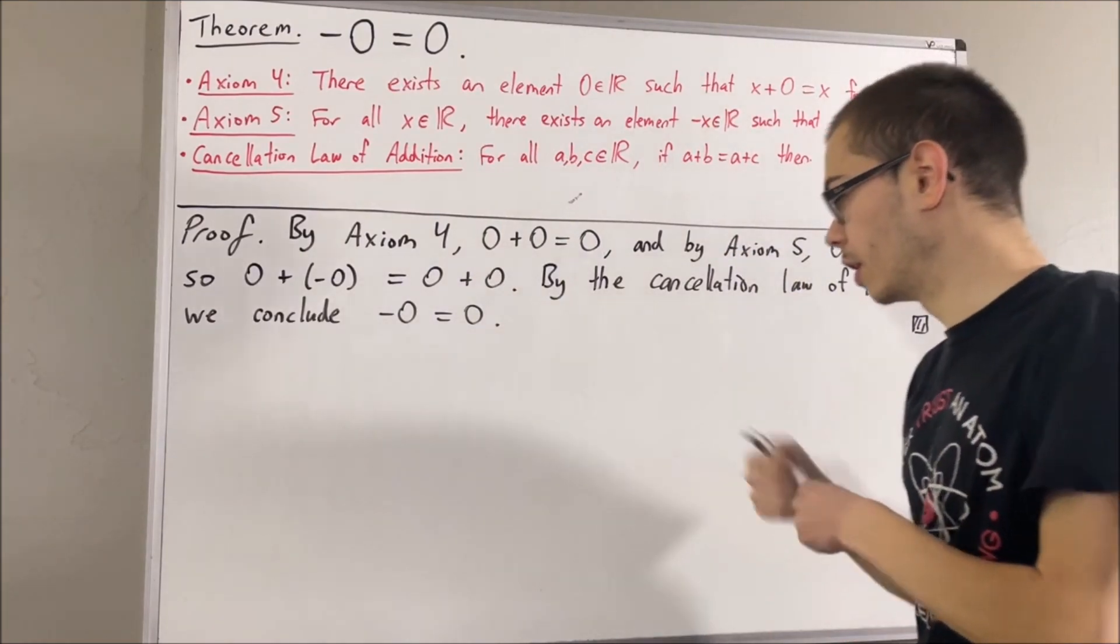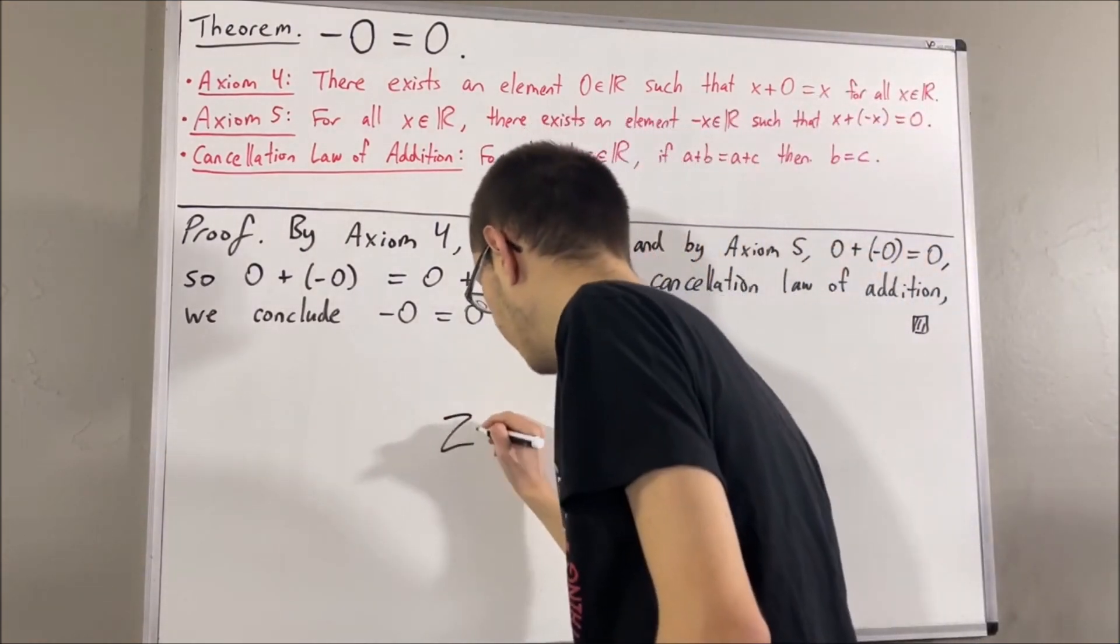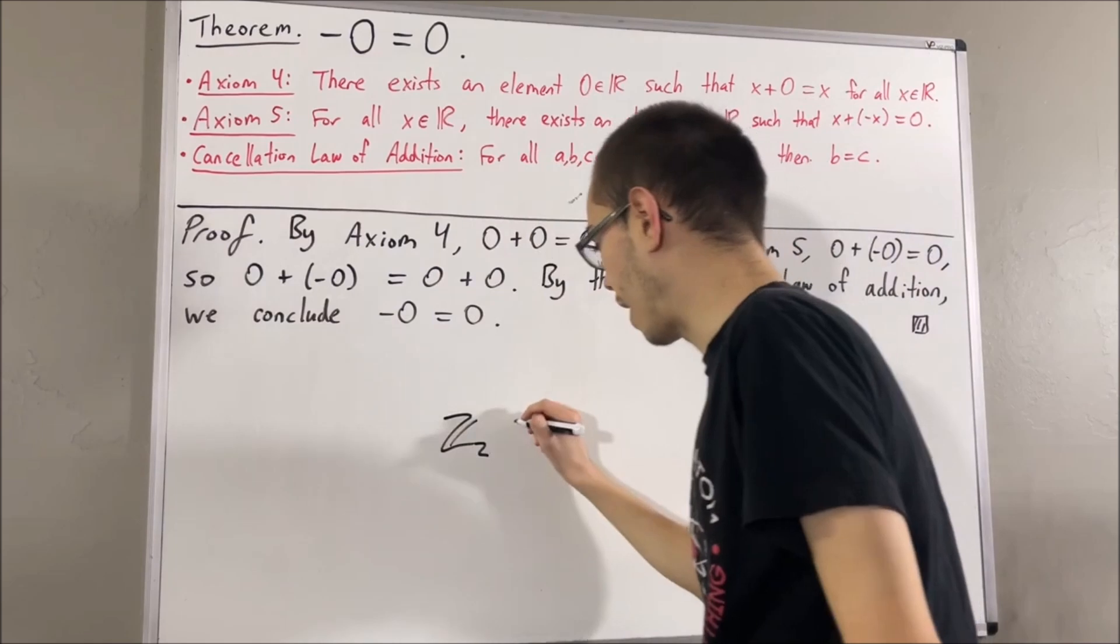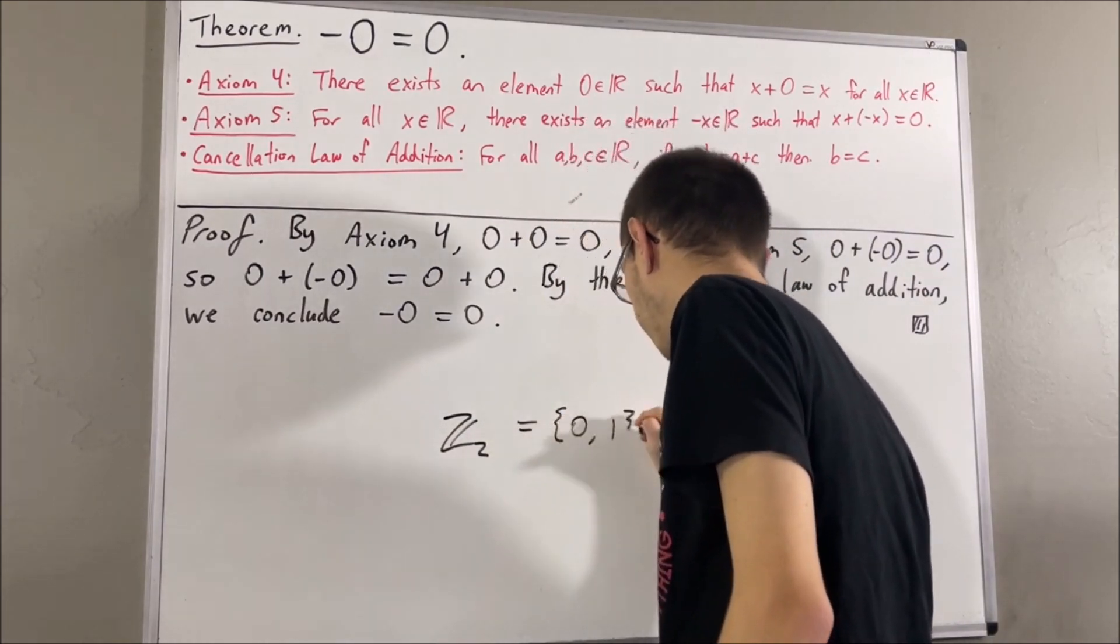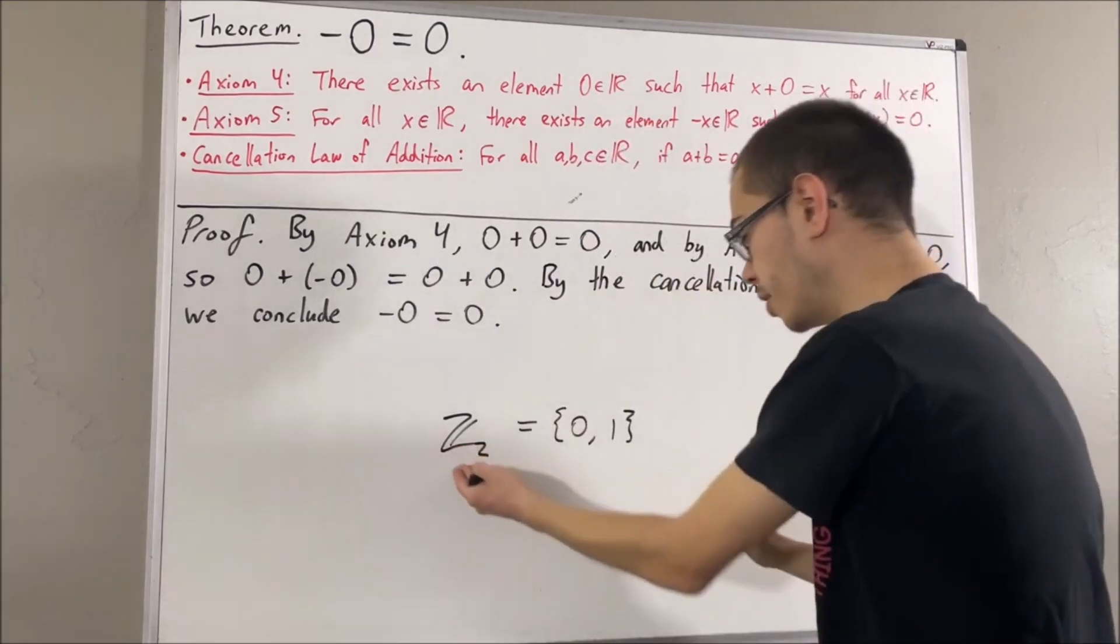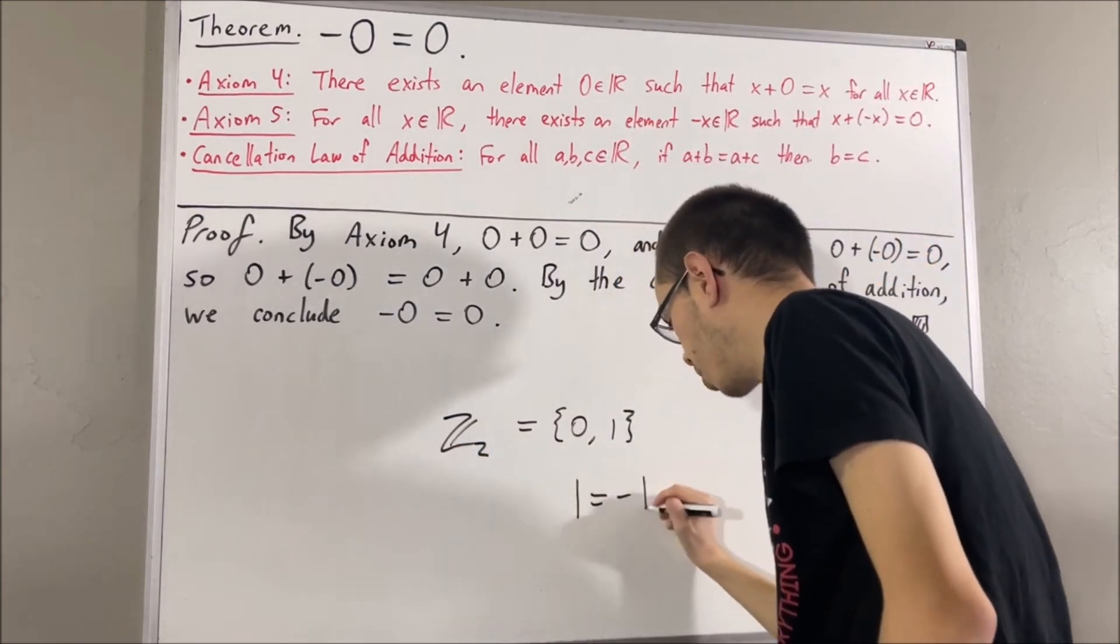For example, if we consider the field Z2, Z2 actually only has two elements in it, zero and one. But in Z2, one is equal to negative one.